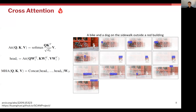Here's a visual representation of what cross-attention can look like. For a caption like "a bike and a dog on the sidewalk outside a red building," which is shown in the image, we can see that for the "bike" token we are attending to the part of the image with the bike, whereas for the "dog" token we are attending to the part of the image with the dog.